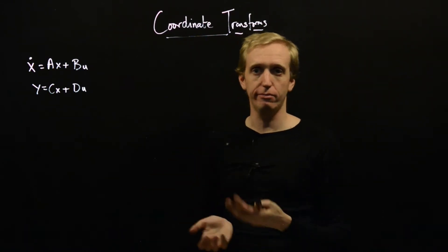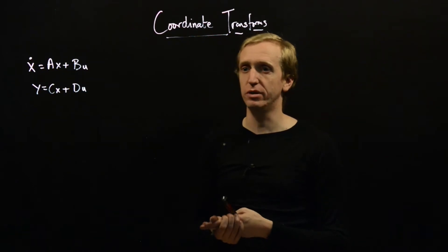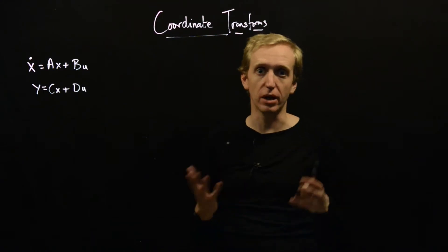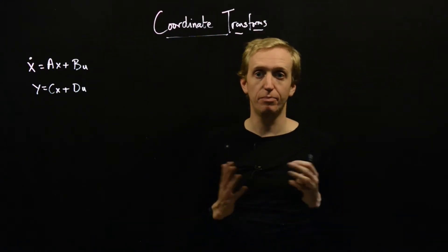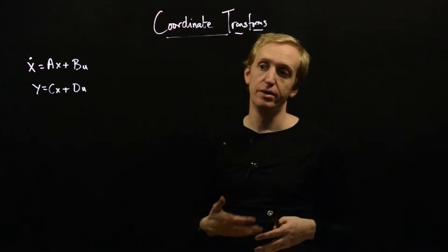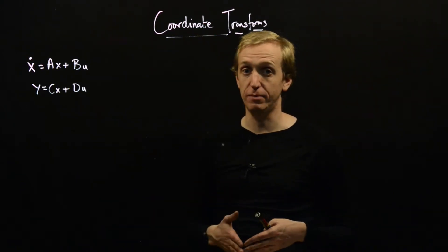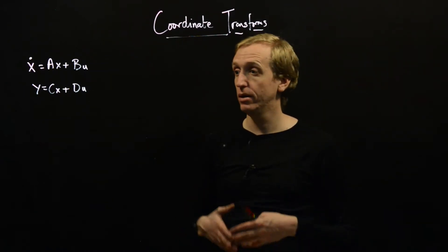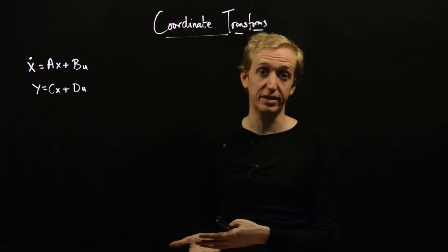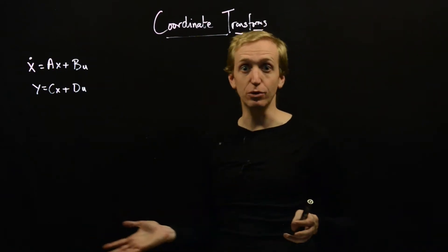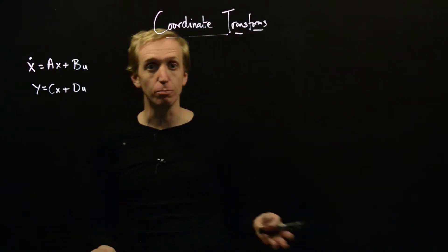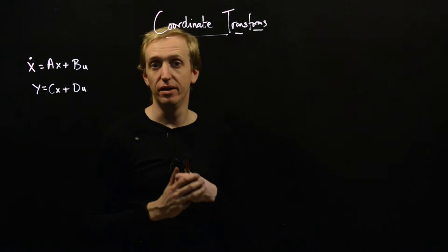We're going to talk about what it means to be a coordinate transformation, and then we're going to see another example of a convenient coordinate transformation. We're going to relate it to the idea of partial fraction expansions — specifically, a way to do partial fraction expansion using state-space techniques, which actually correspond to linear algebra techniques, meaning we can easily do them on the computer.